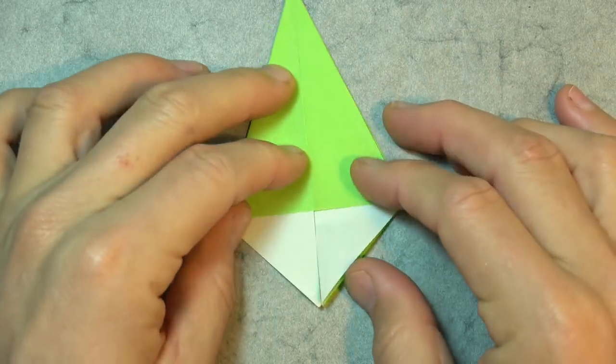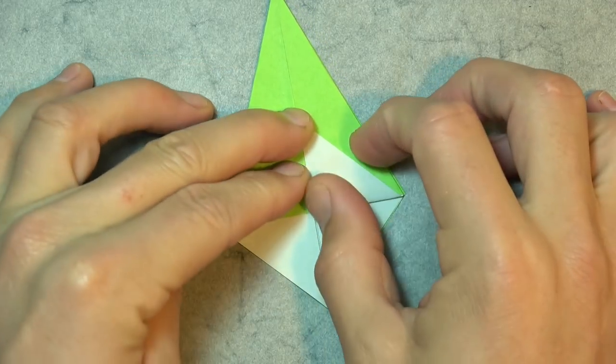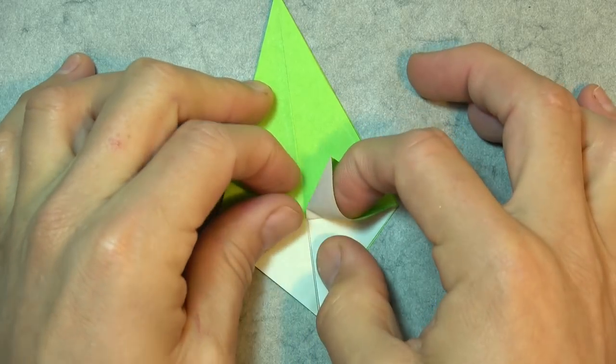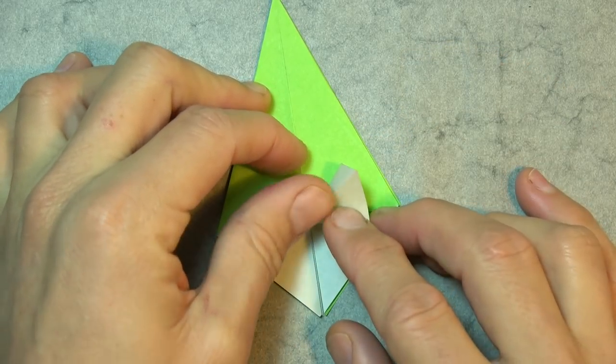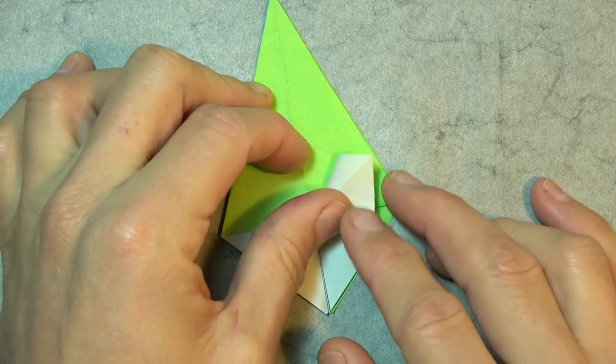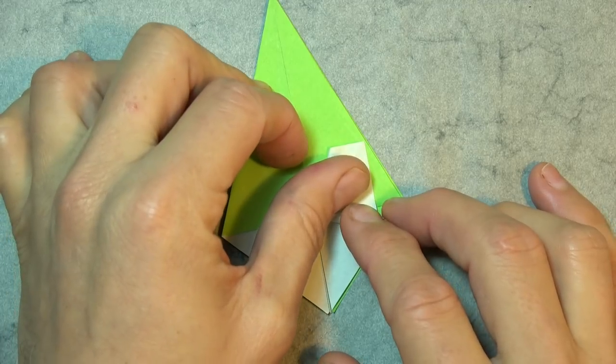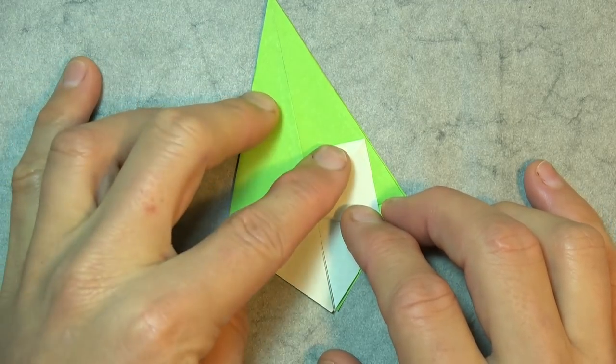Alright, now rotate and fold this flap up, and crease it. And now open it and squash it, but not like that. We want to squash it so that this corner touches this edge. Like that.